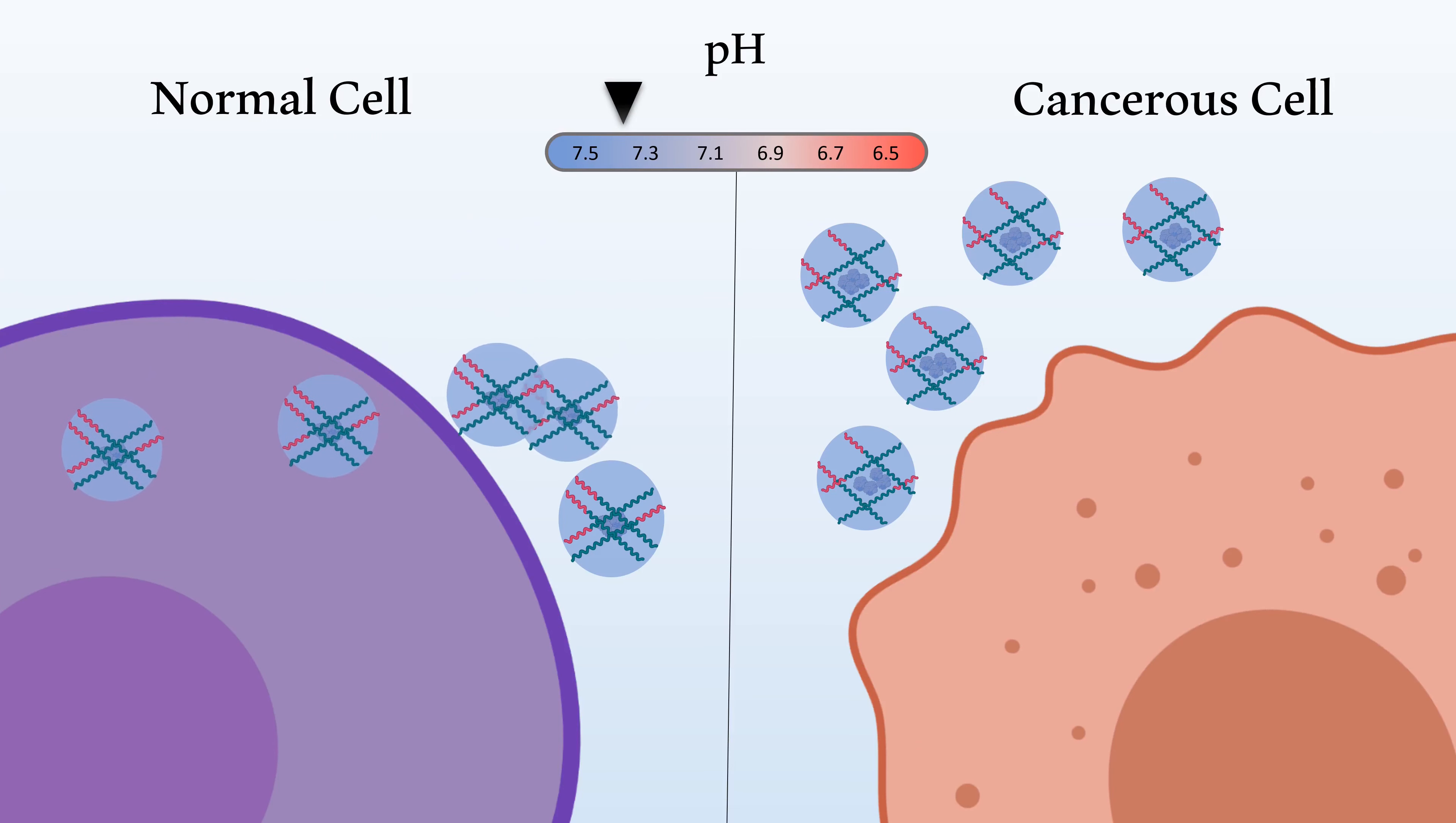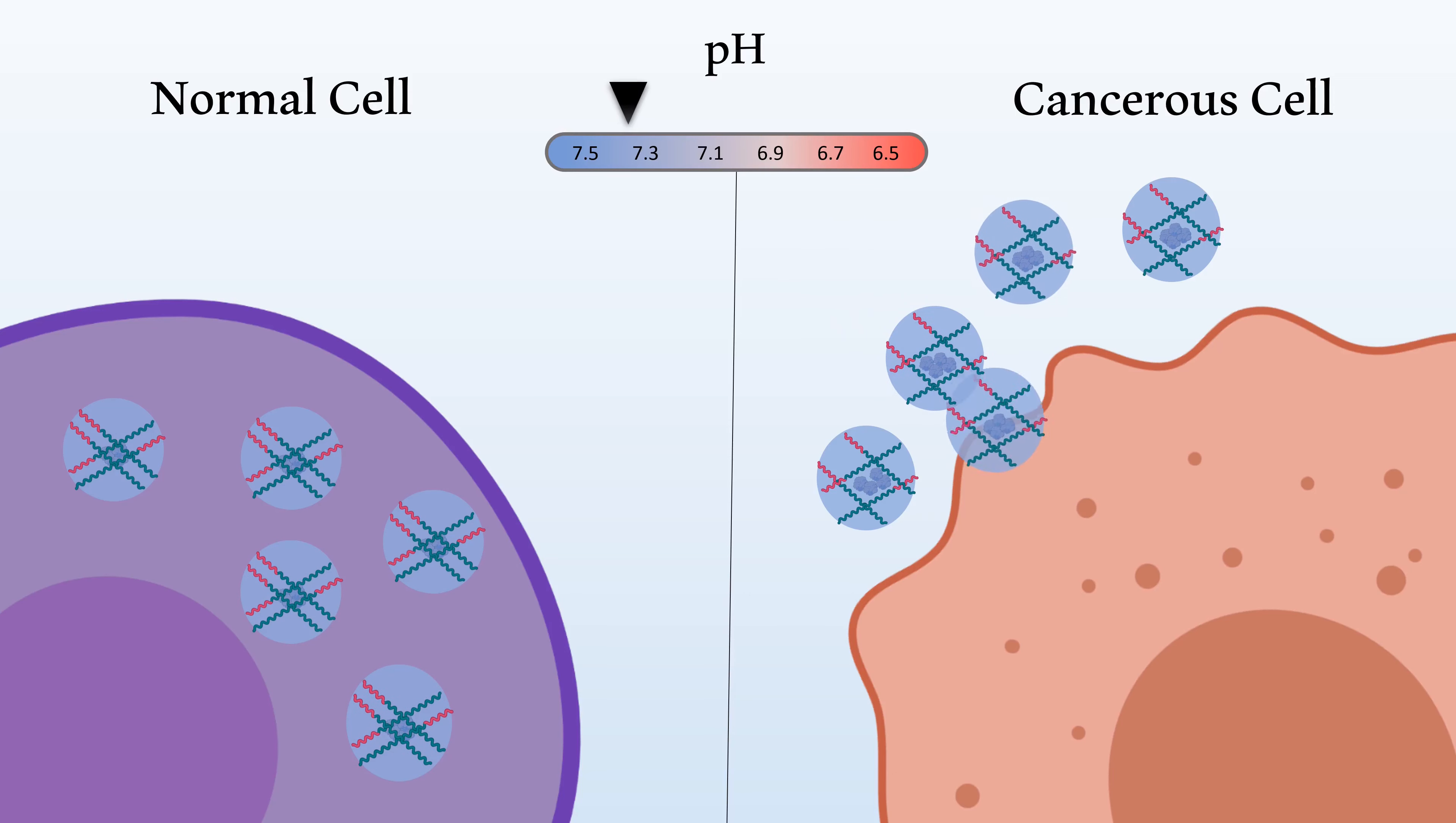Once at the correct site, the nanogels enter the cell. In a normal cell, the pH does not trigger release. However, in a cancer cell, the acidic pH causes the release of cargo. This could be because the gel shrinks or because the structure of the polymers degrade.